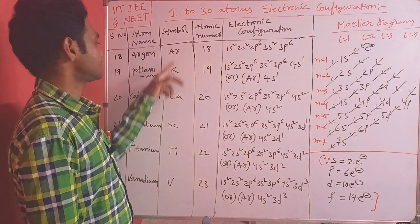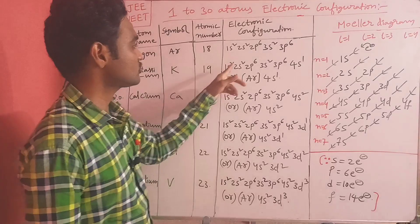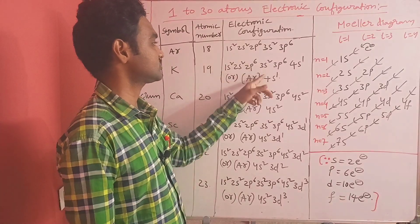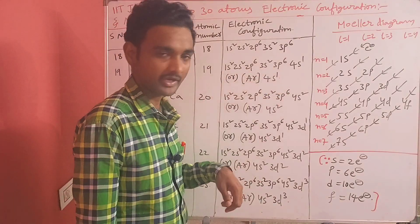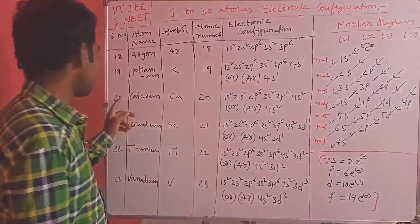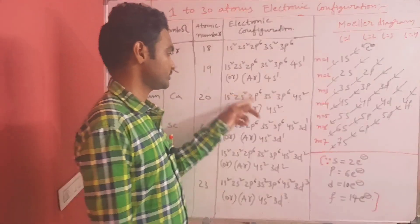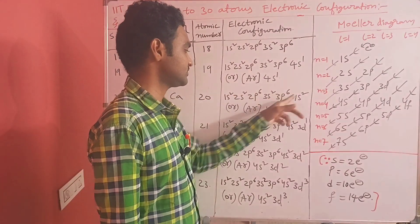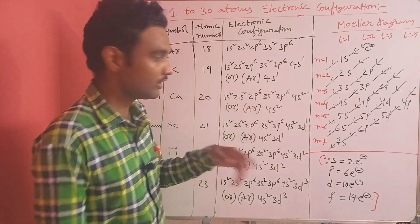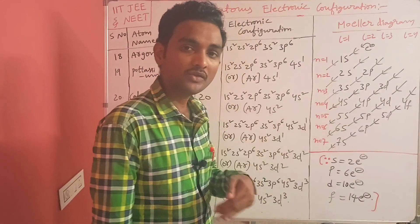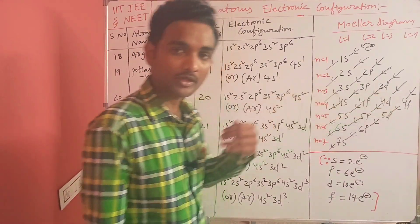Potassium (K), atomic number 19: 1s2 2s2 2p6 3s2 3p6 4s1, overall [Ar] 4s1. Calcium (Ca), atomic number 20: 1s2 2s2 2p6 3s2 3p6 4s2, overall [Ar] 4s2. Now the 4s orbital is also completely filled, so the next electron will go to the 3d orbital.